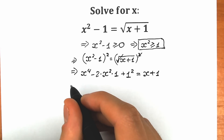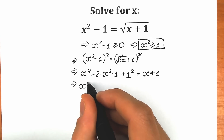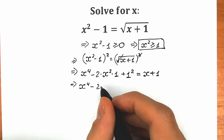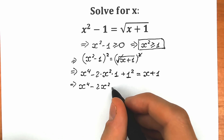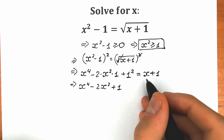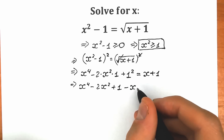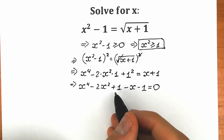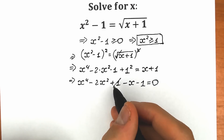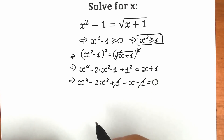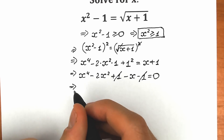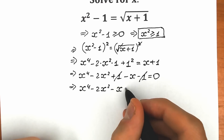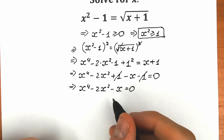Let's simplify this equation. We have x⁴ - 2x² + 1 = x + 1. We can cancel the +1 on both sides. Bringing everything to the left side gives us x⁴ - 2x² - x = 0.